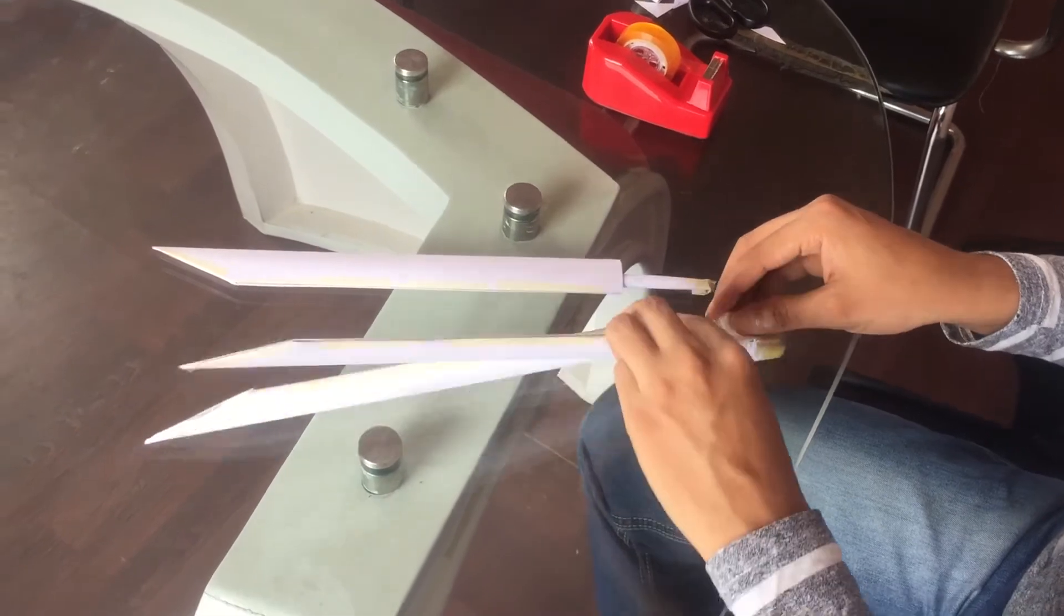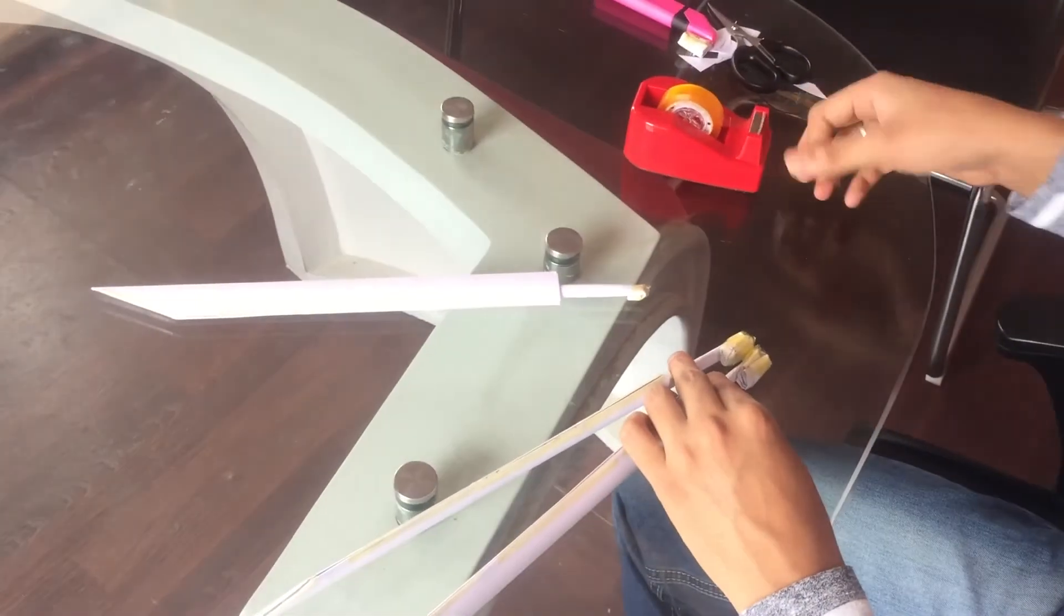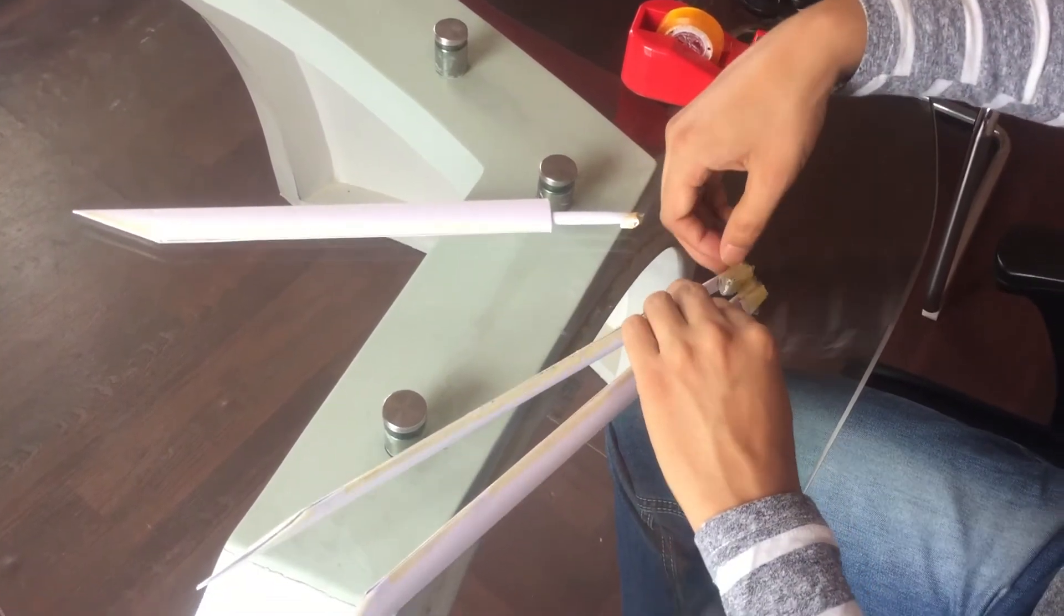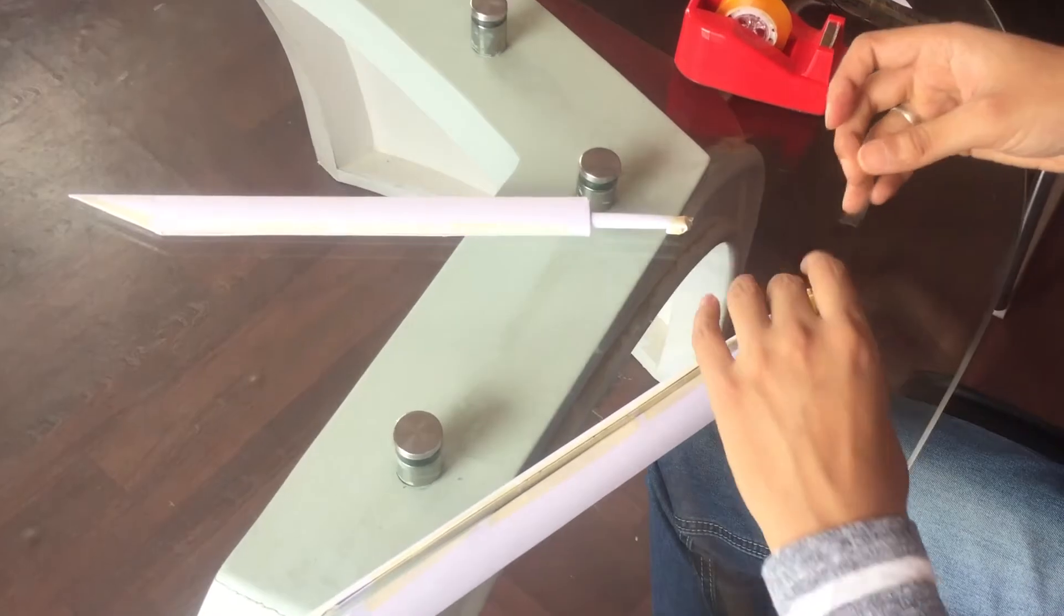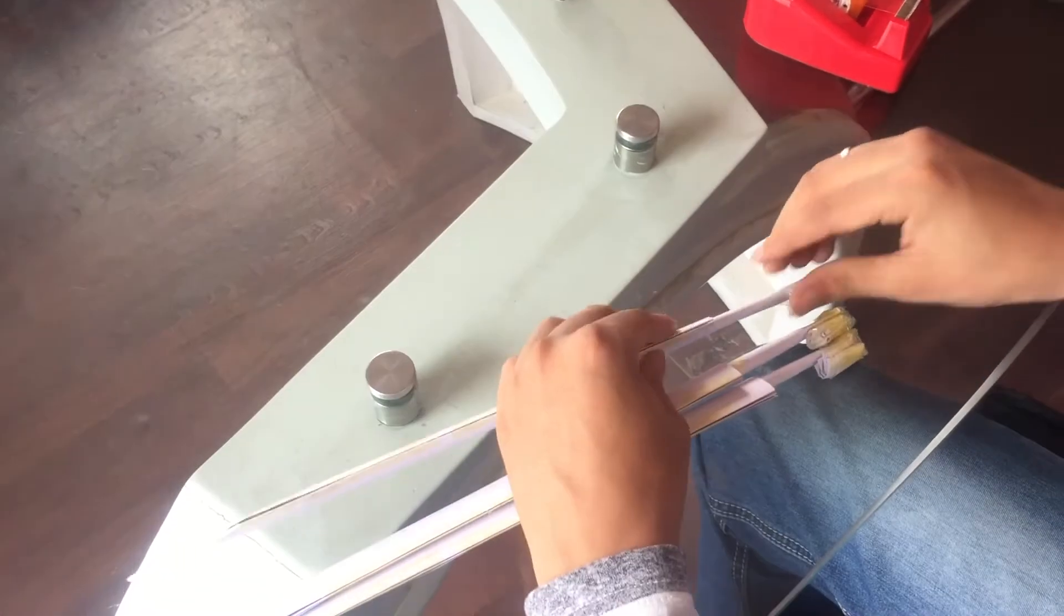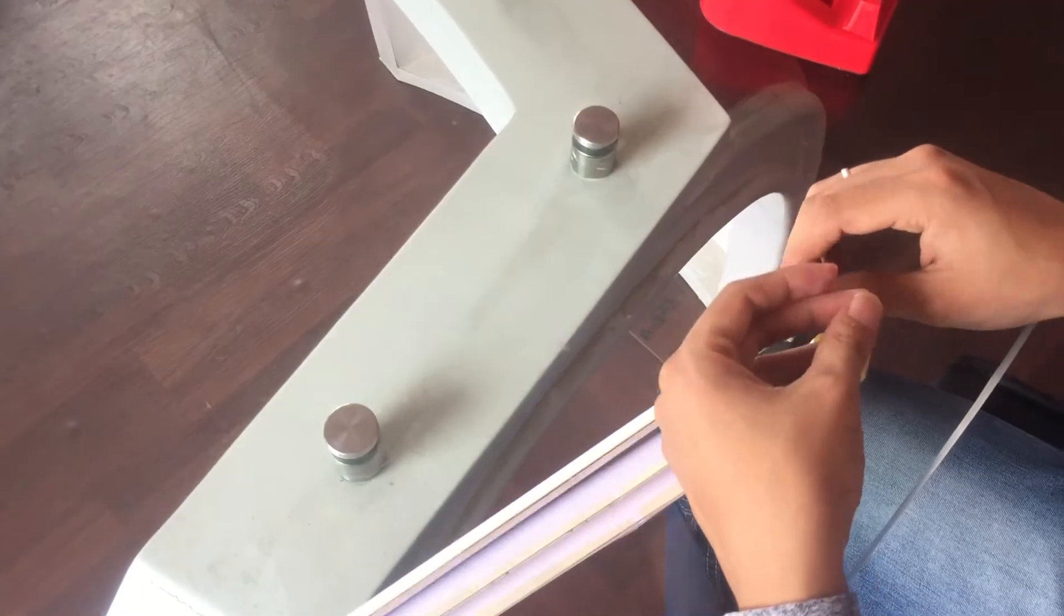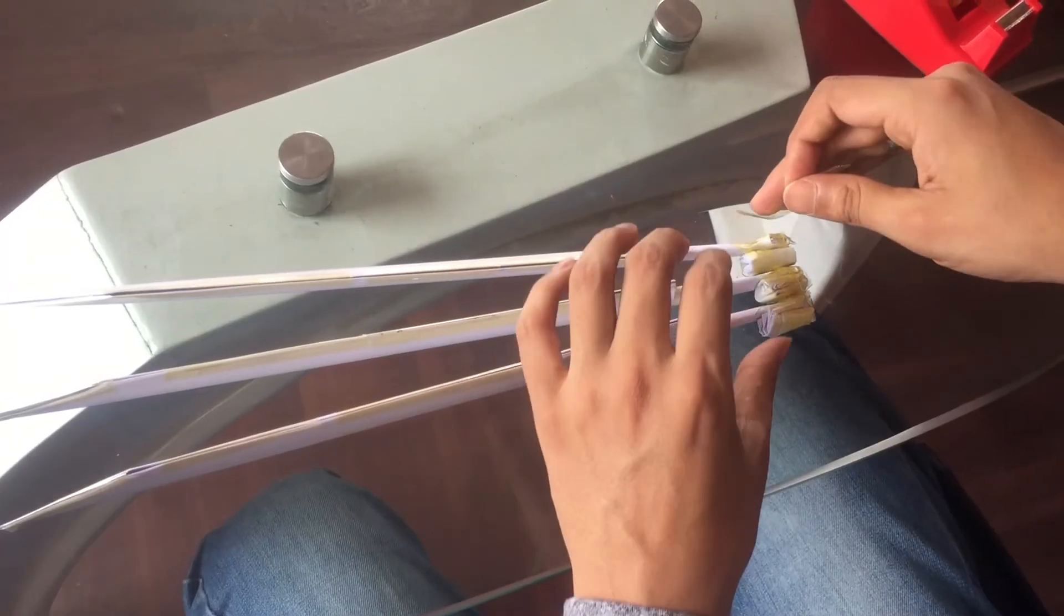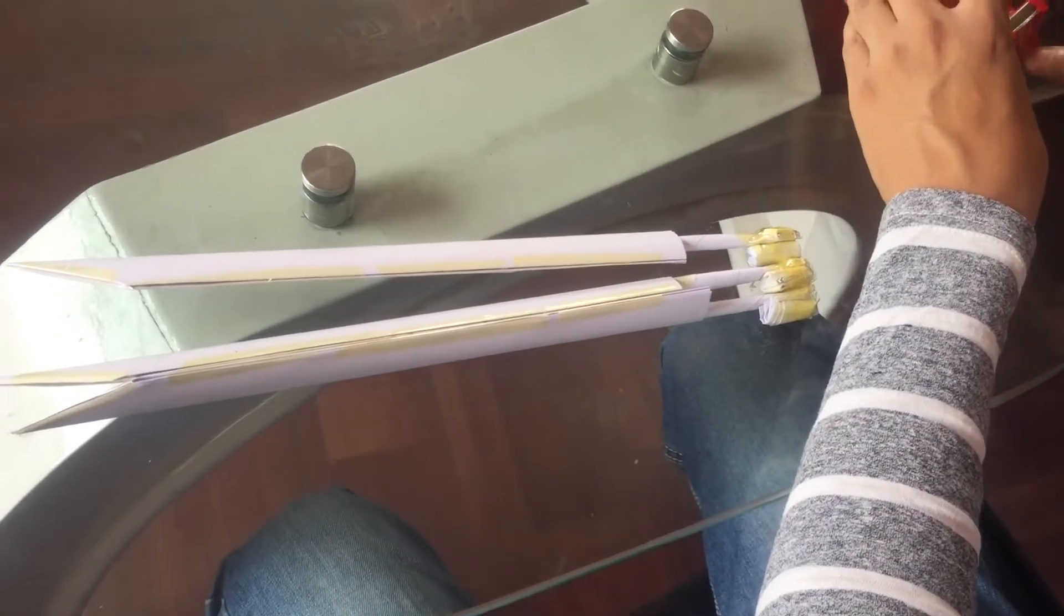After that we need to go in these two short. Put it as much as you need the tape. So finally we need to attach all these three so it seems like Wolverine claws.